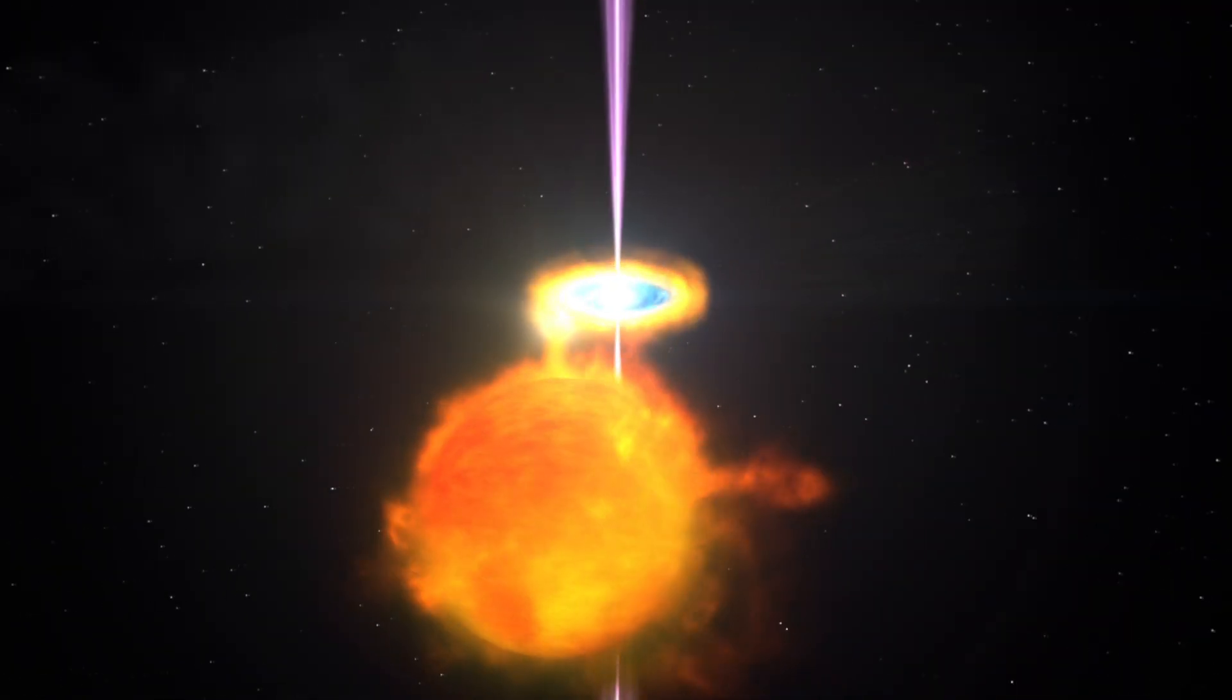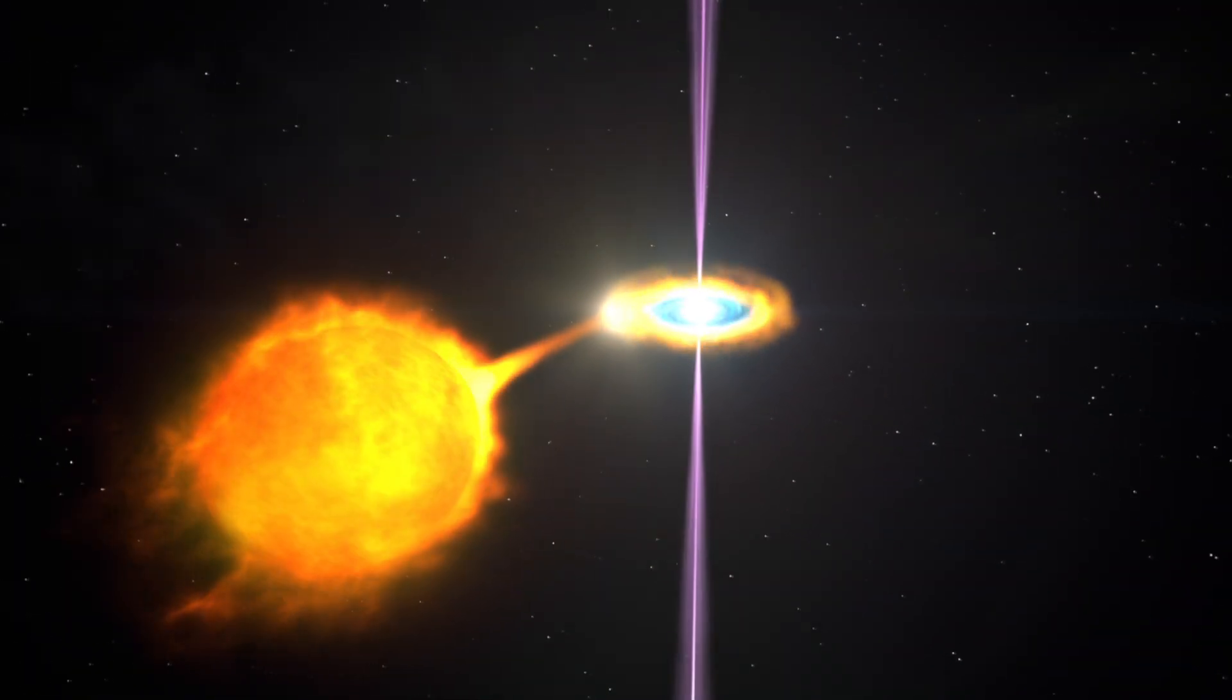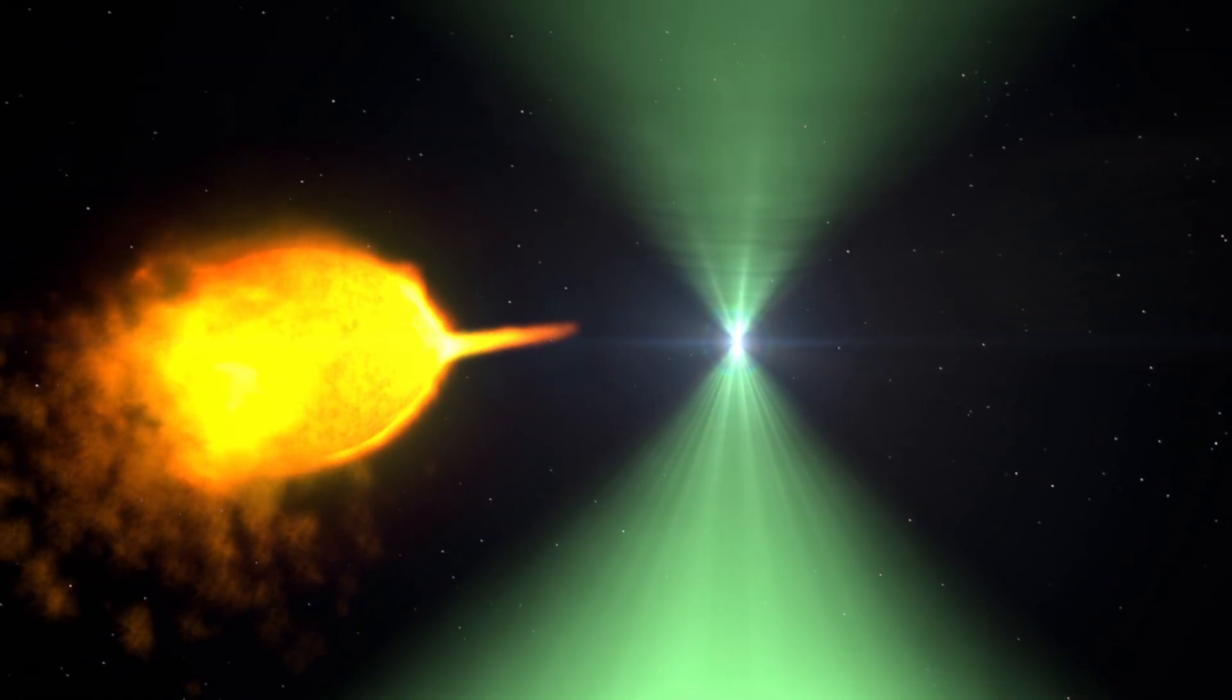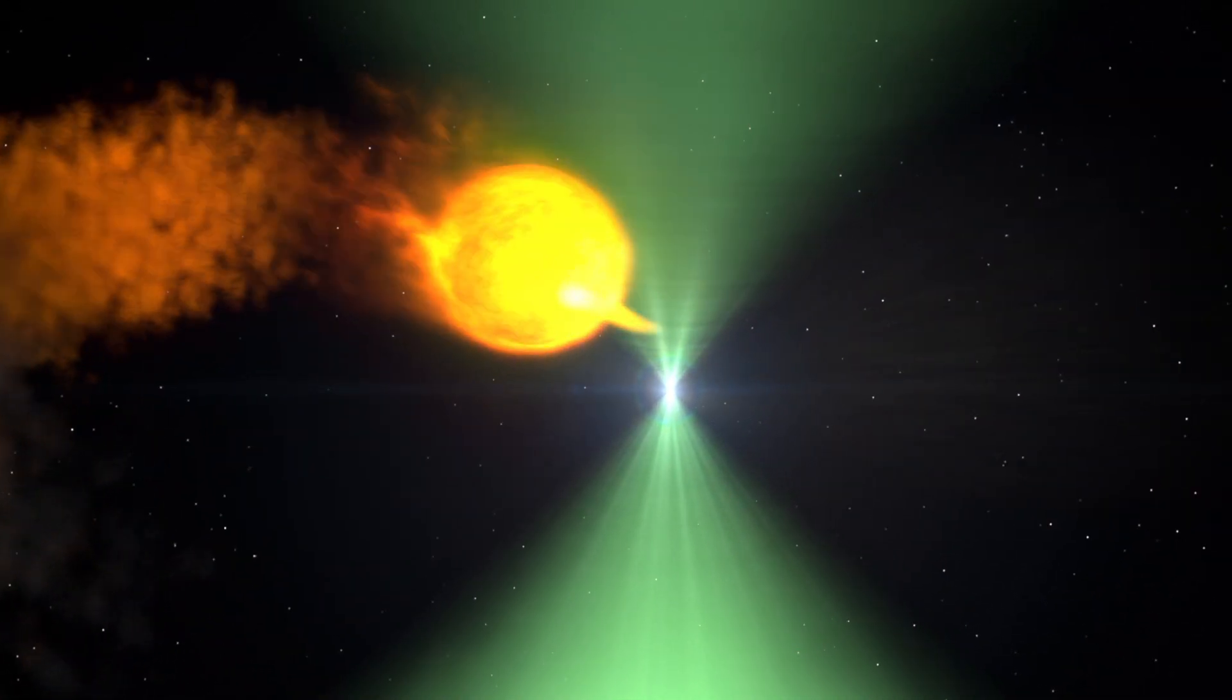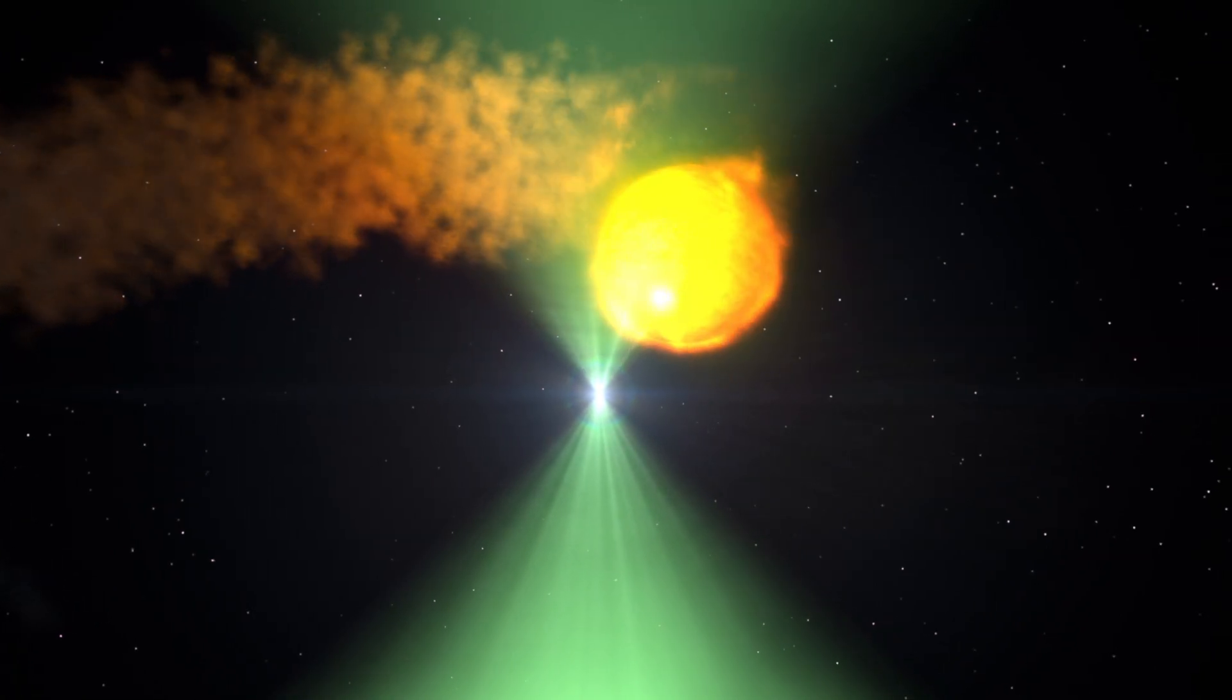Eventually, and for reasons not understood, the companion's flow ebbs. The pulsar wind again becomes dominant, choking off the flow and blowing away the accretion disk. The pulsar flips back to its radio-emitting mode.